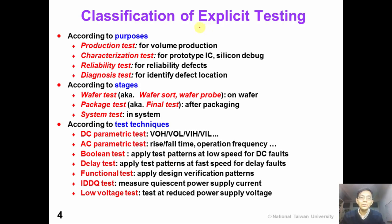In this course, we are going to focus on explicit testing. Explicit testing can be classified according to different standards. First of all, it can be classified according to the purpose of the test. For example, production test is performed for volume production, so test cost and test quality are very important.